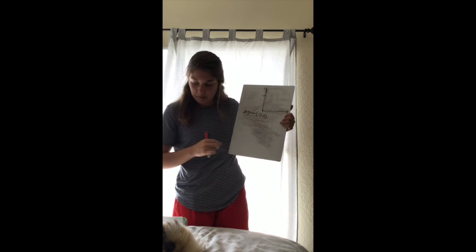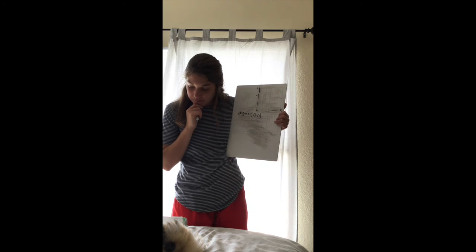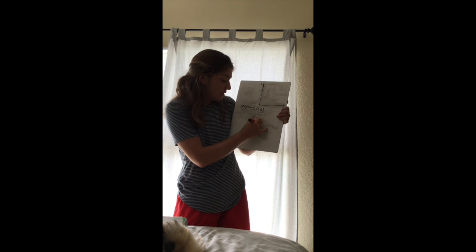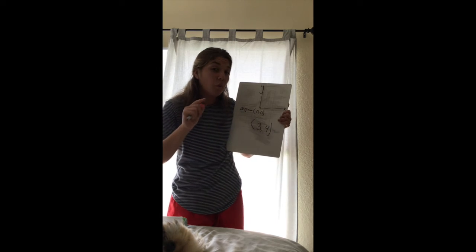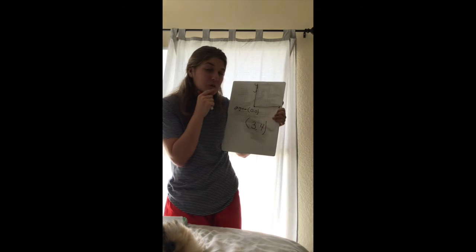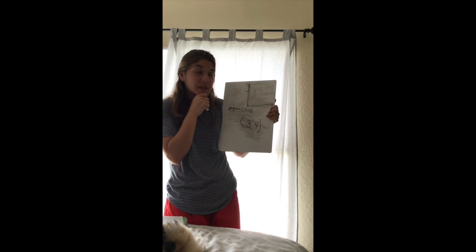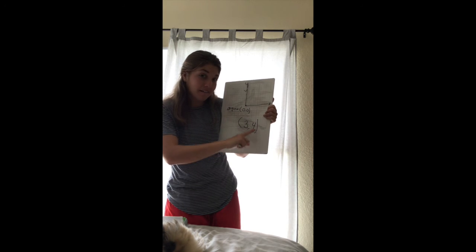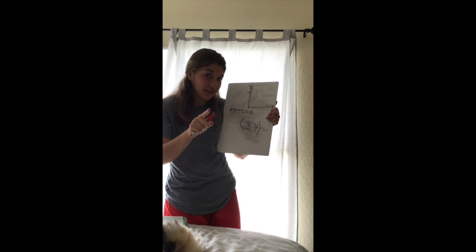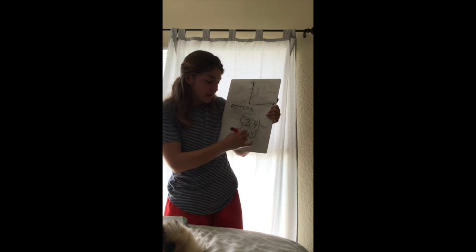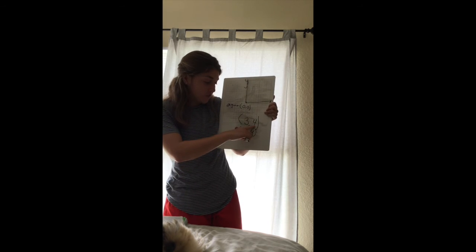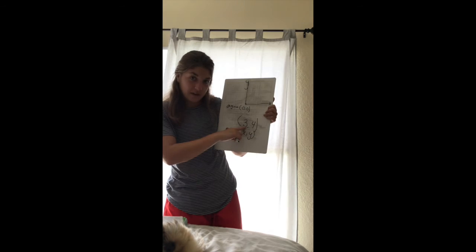Okay, don't forget the parentheses and the comma. In the ordered pair (3, 4), what would be the y-coordinate? Did you say four? You're correct. Don't forget how to write an ordered pair — you go x comma y. So four is the y-coordinate and three is the x-coordinate.